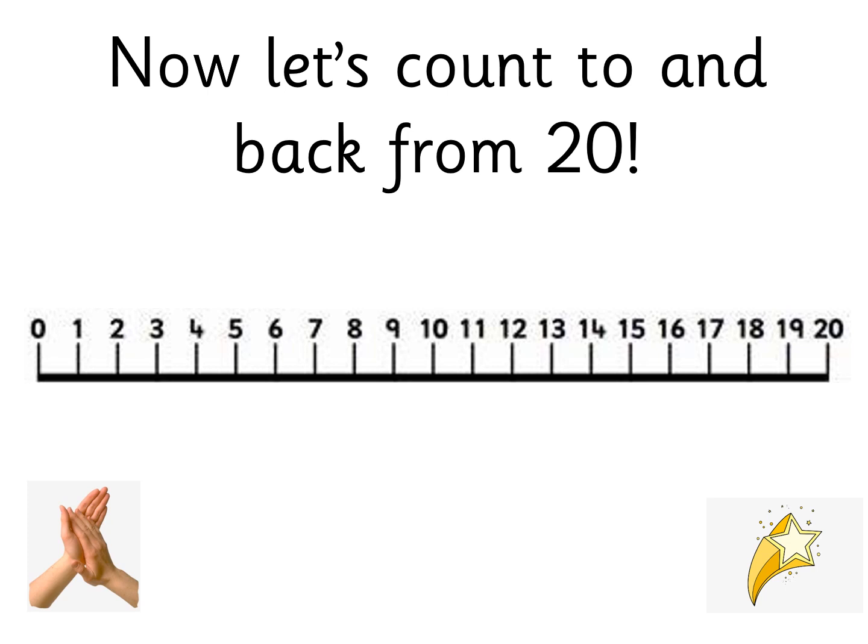Let's do shooting stars starting from 10: 10, 11, 12, 13, 14, 15, 16, 17, 18, 19, 20. And let's go backwards blinking our eyes: 20, 19, 18, 17, 16, 15, 14, 13, 12, 11, 10. Well done! Now you're going to point to a number when I say it.